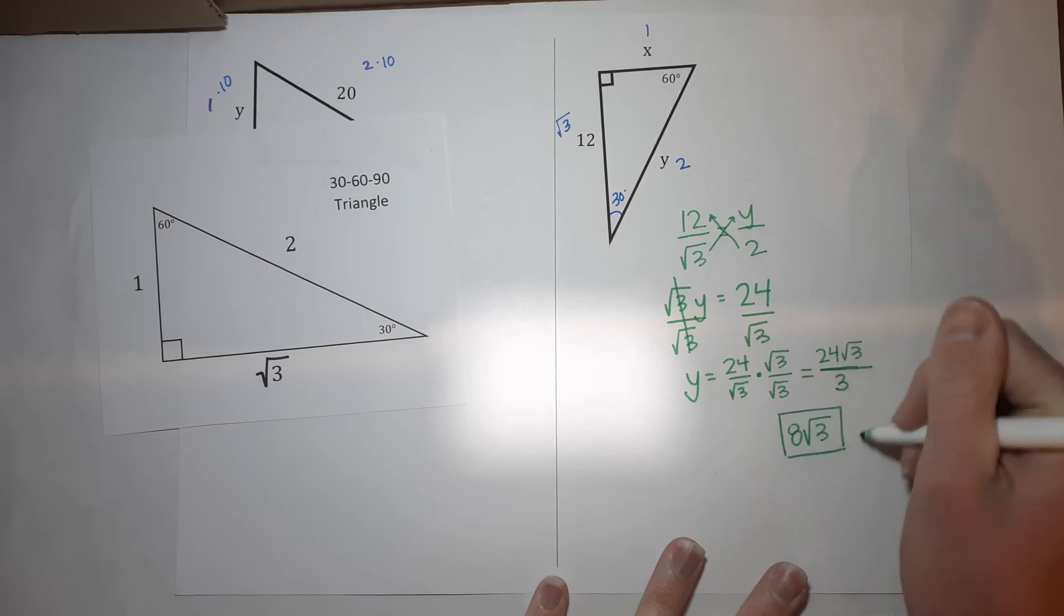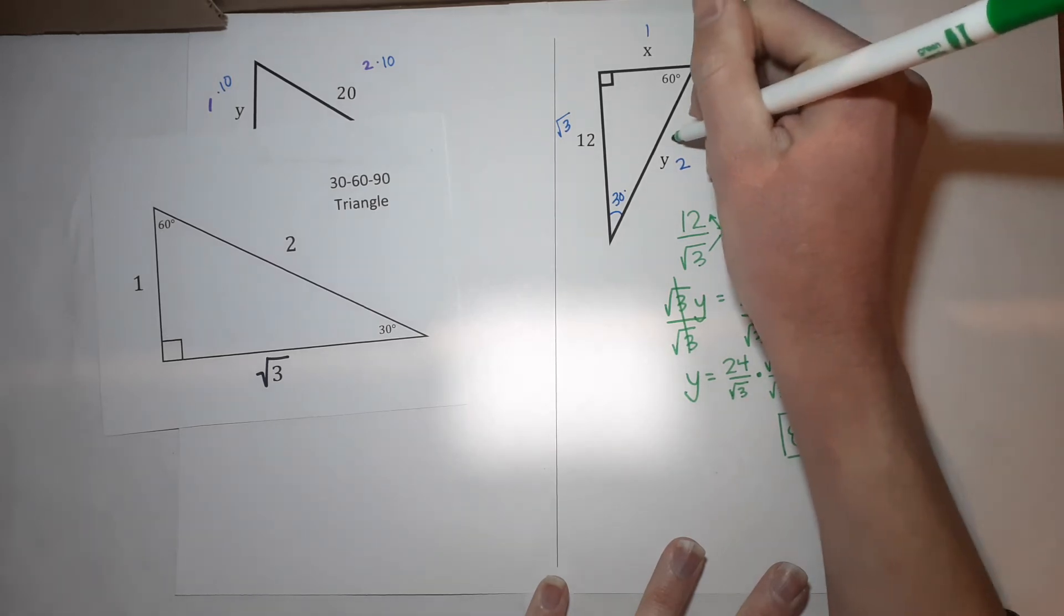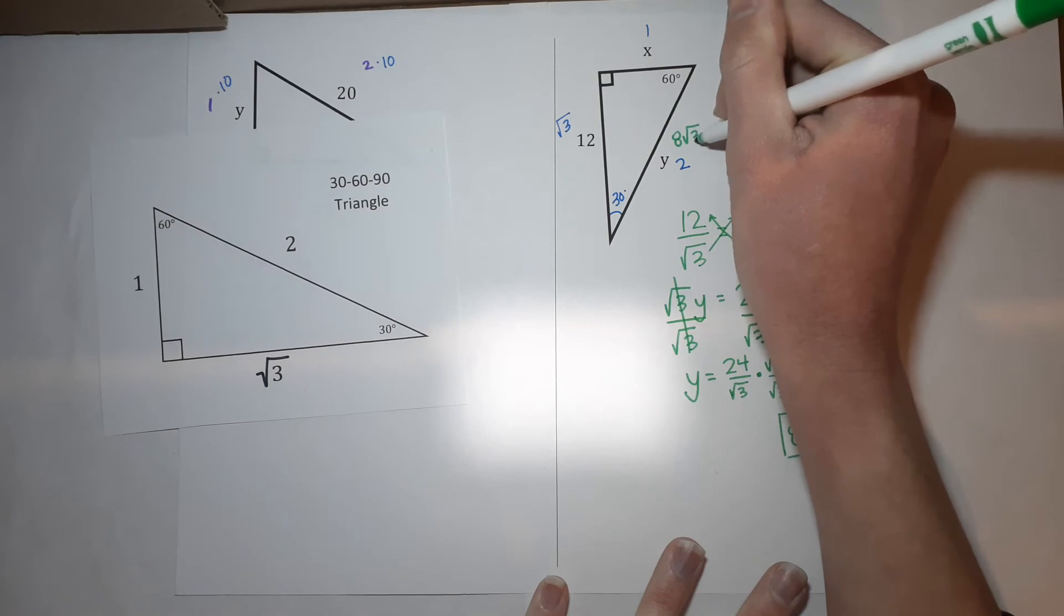And which letter was that? That was Y. So Y is 8 square roots of 3.